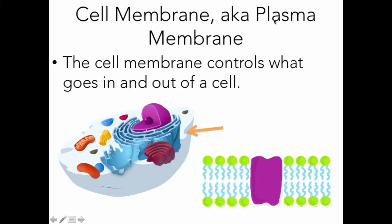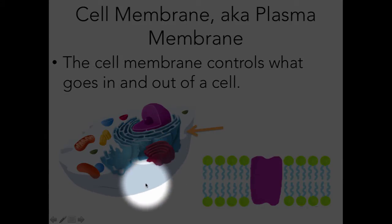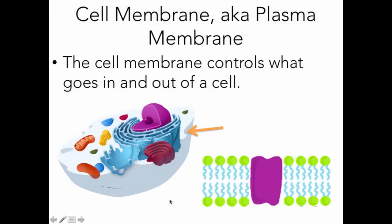The next cell part is the cell membrane, also known as the plasma membrane. The cell membrane controls what goes in and out of the cell. It's found on the outer edge of the cell and regulates what enters and exits — kind of like a bouncer at a club, or like a screen door that lets in air and light but not bugs. If you zoom in on the plasma membrane, it's actually made of two main things: phospholipids and proteins.